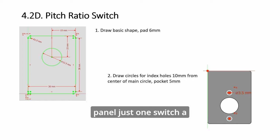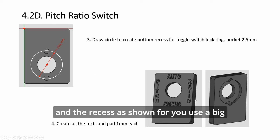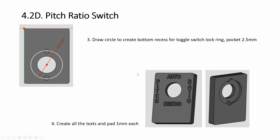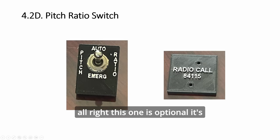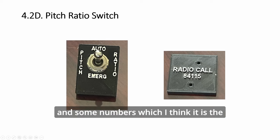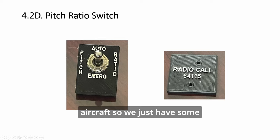Next we look at the pitch ratio switch panel - just one switch, a toggle with locking holes and the recess as shown. Use a big toggle and you're done. This is very simple. Add some text and pad. This is optional - if you look at real photos they will have a radio call and some numbers, which I think is the tail number of the aircraft.